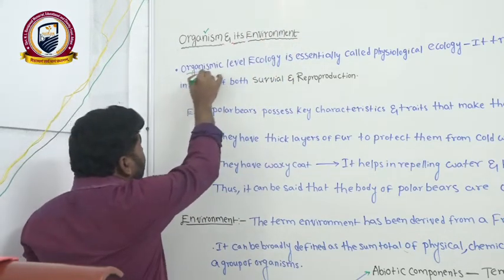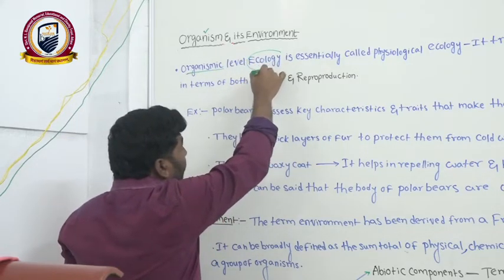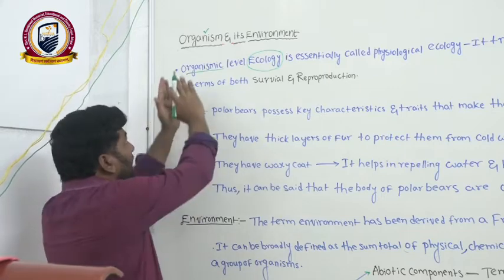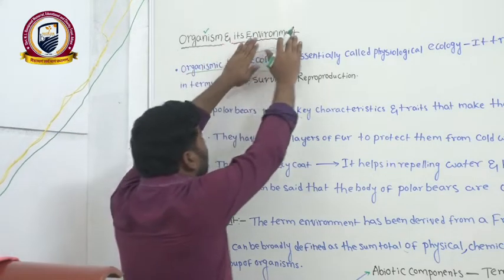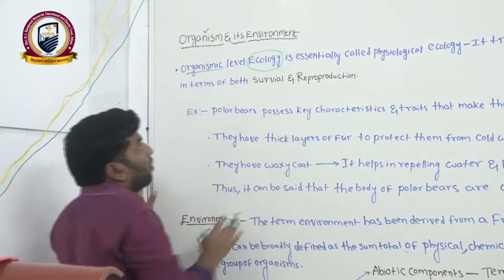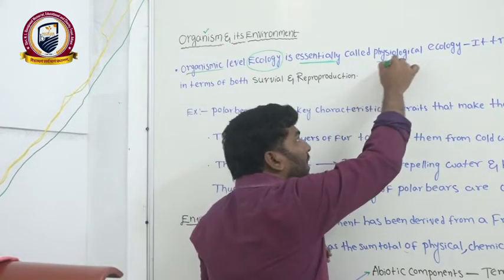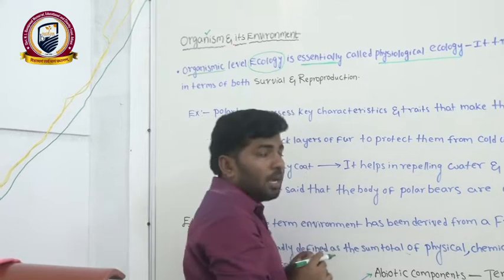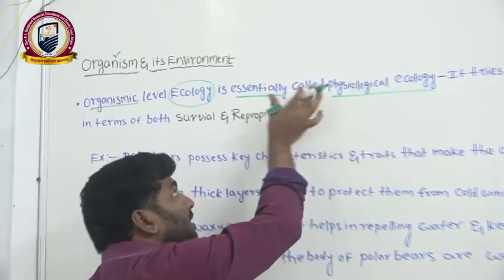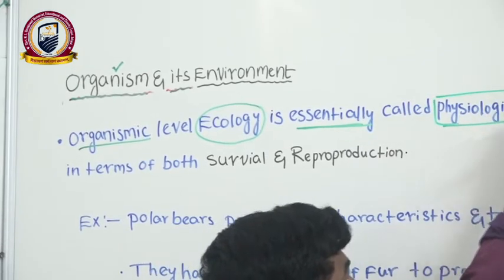First of all, organismic level ecology. Ecology means the study of interactions — organic interactions with the environment. Organism level ecology is essentially called physiological ecology. This is a very important point for the entrance exam.